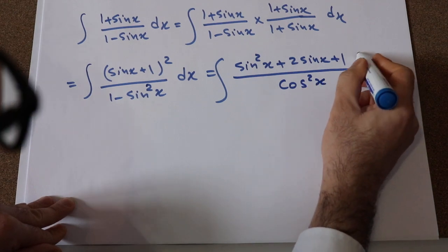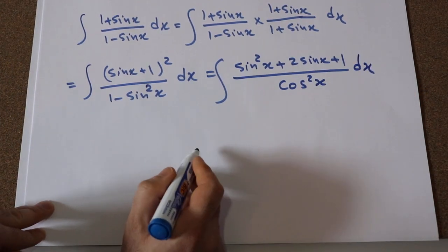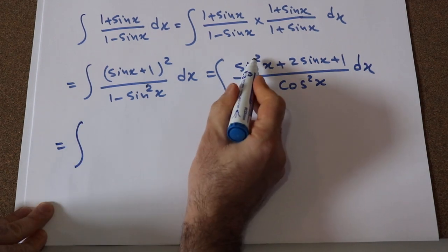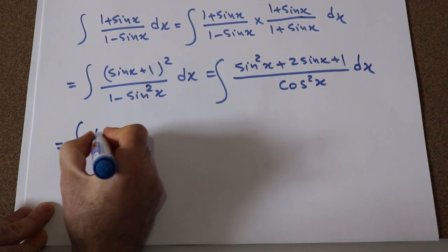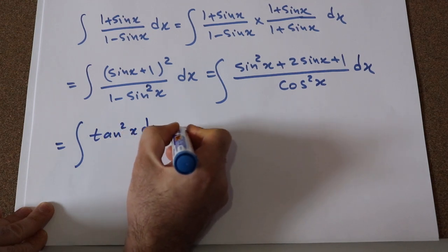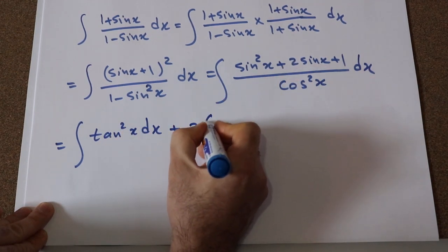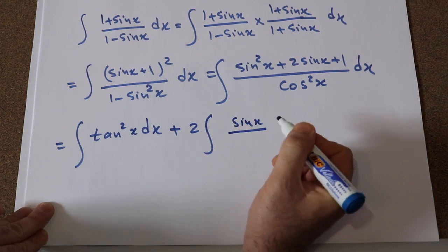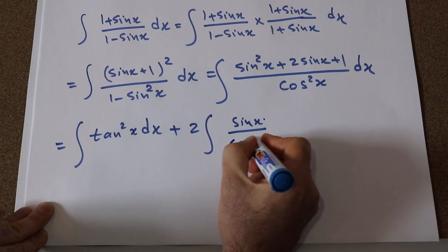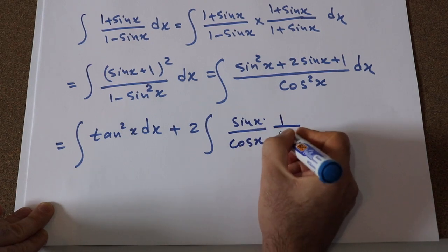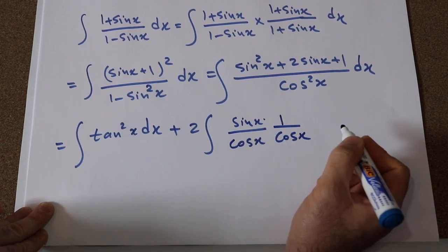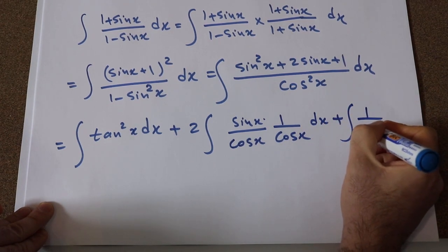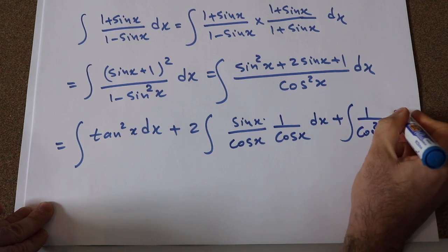And 1 - sin²x equals cos²x. So now this integral can be split: sin²x divided by cos²x gives tan²x, plus 2 sin x divided by cos x times 1/cos x, plus 1 divided by cos²x dx.